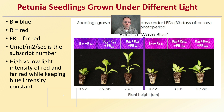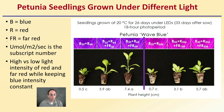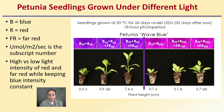Looking at petunia seedlings run under different light conditions for comparison: B is blue, R is red, FR is Far Red, and the subscript number is micromoles per meter squared per second. High versus low light intensities of red and Far Red were tested while keeping blue light intensities constant. We can see the plants look very different depending on the amount of red and Far Red they received. In one case plants were given twice as much red versus Far Red; in another, equal red and Far Red. Plant height was specifically measured, showing clear morphological changes.